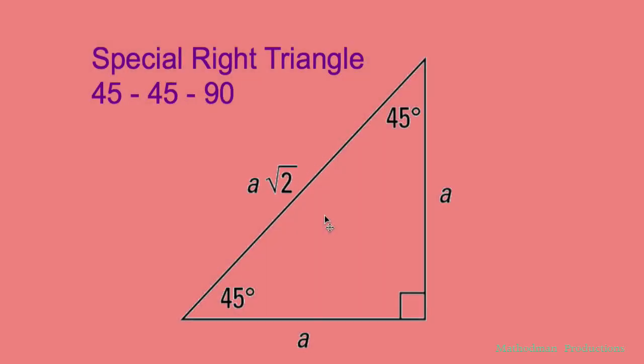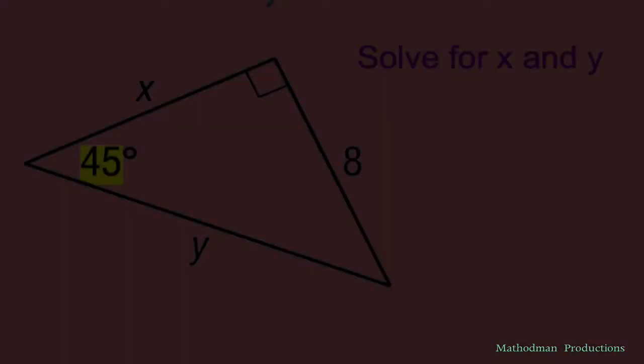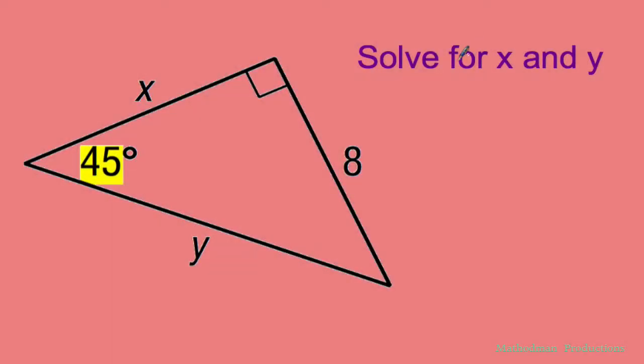Let's go apply this relationship to our first problem. First problem: solve for X and Y. I'm given that this is 45 degrees, this is 90, which makes this 45 degrees as well because all the interior angles of a triangle have to add up to 180.